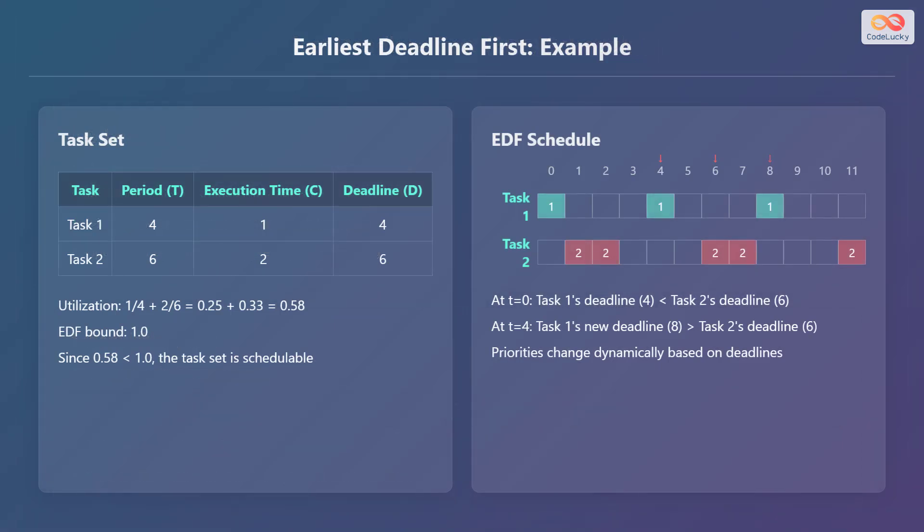Let's consider an example of Earliest Deadline First, or EDF, scheduling. We have two tasks. Task 1 has a period of 4, an execution time of 1, and a deadline of 4. Task 2 has a period of 6, an execution time of 2, and a deadline of 6.